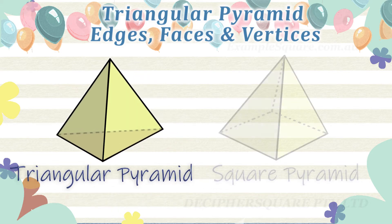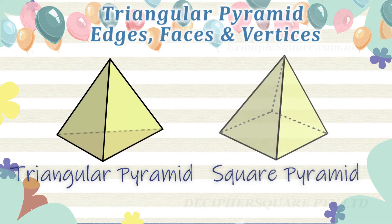A square pyramid is a pyramid with a square base. A hexagonal pyramid is a pyramid with a hexagonal base.